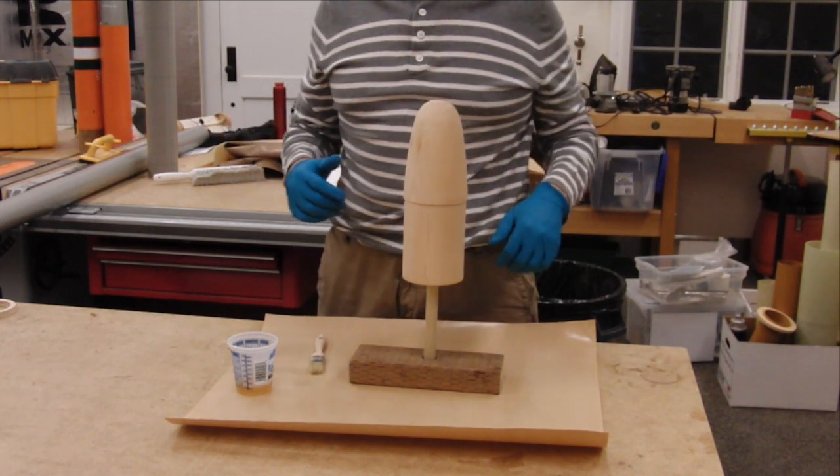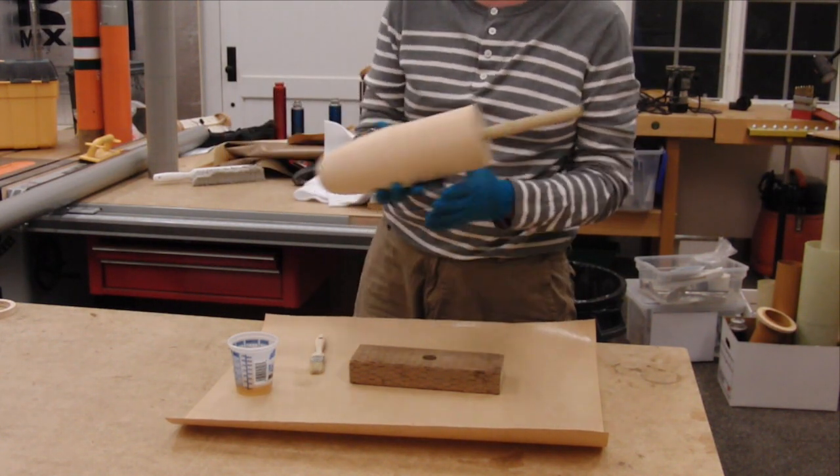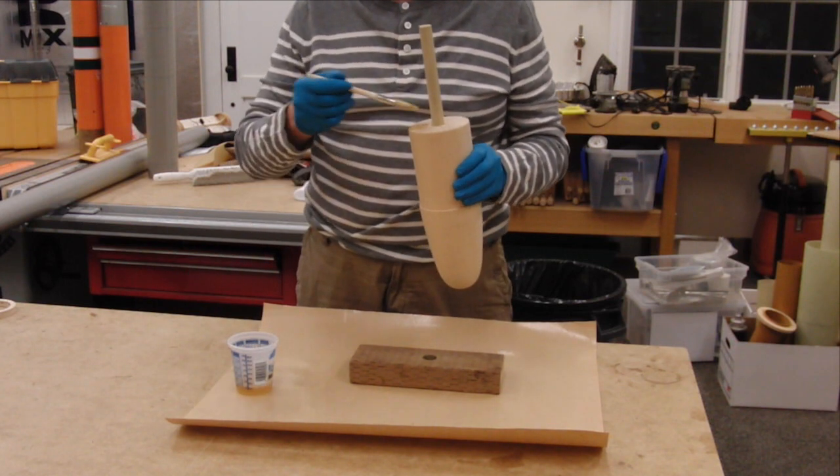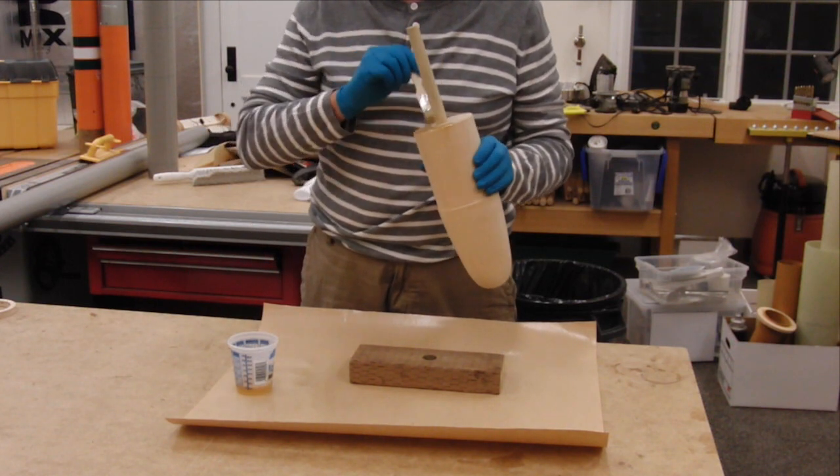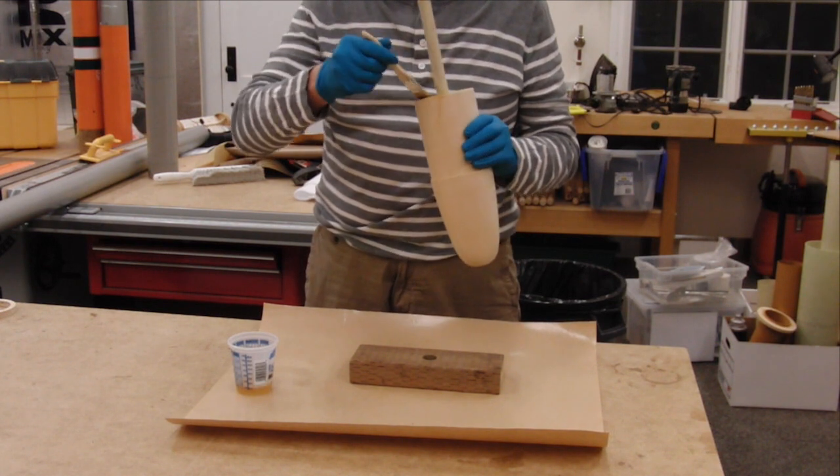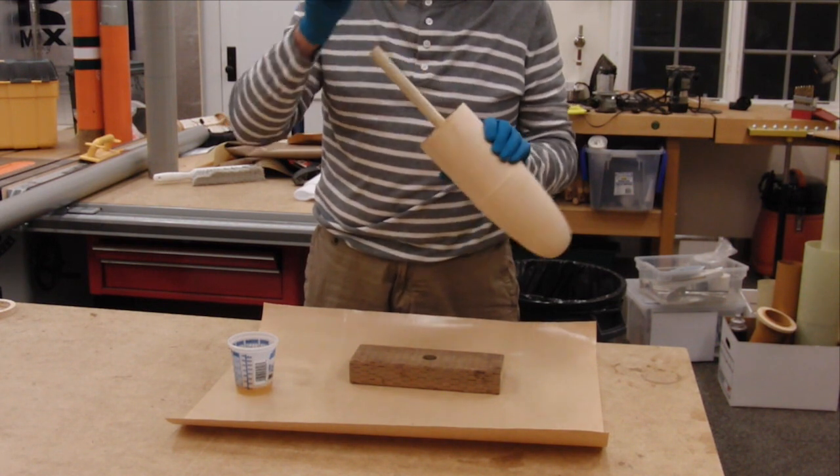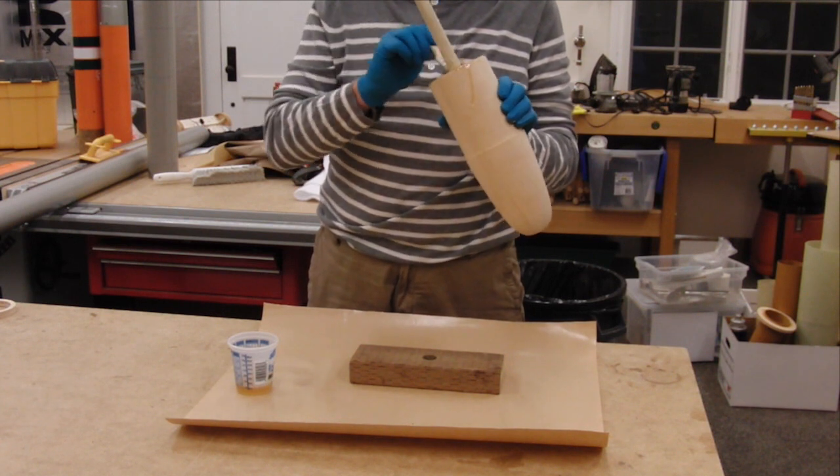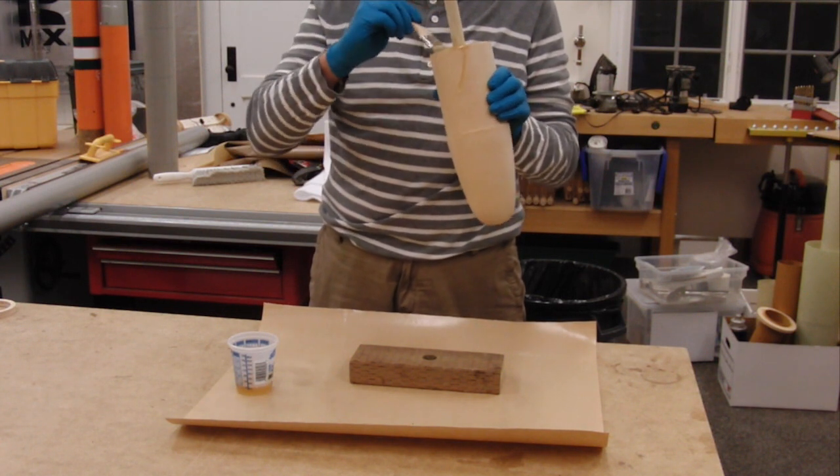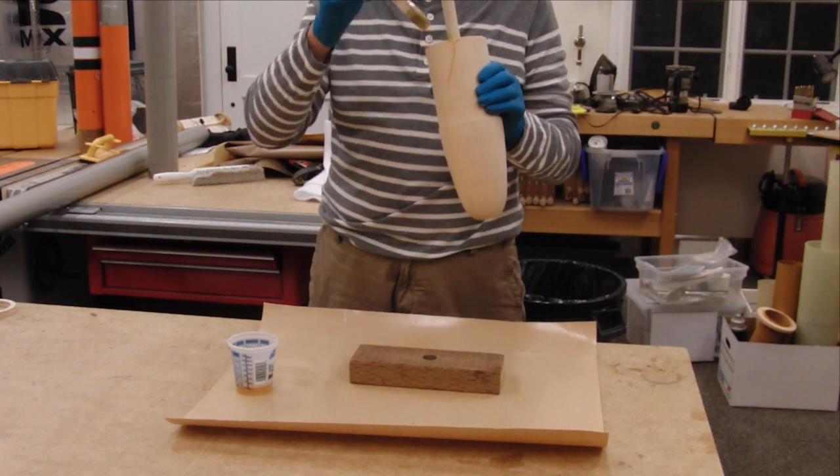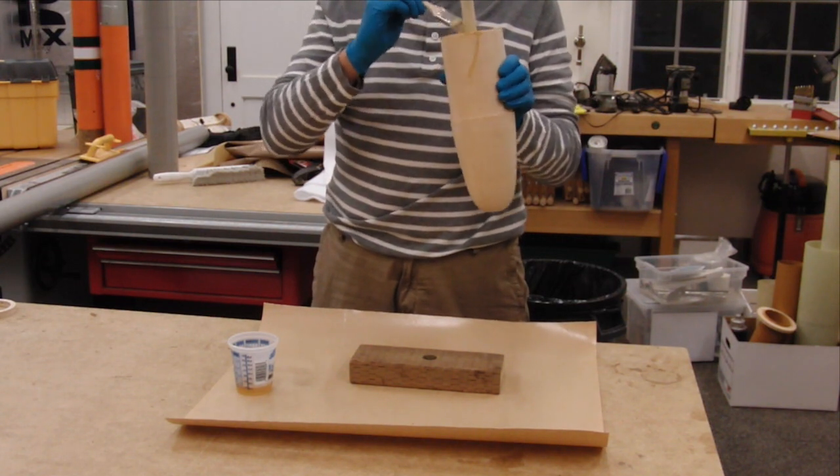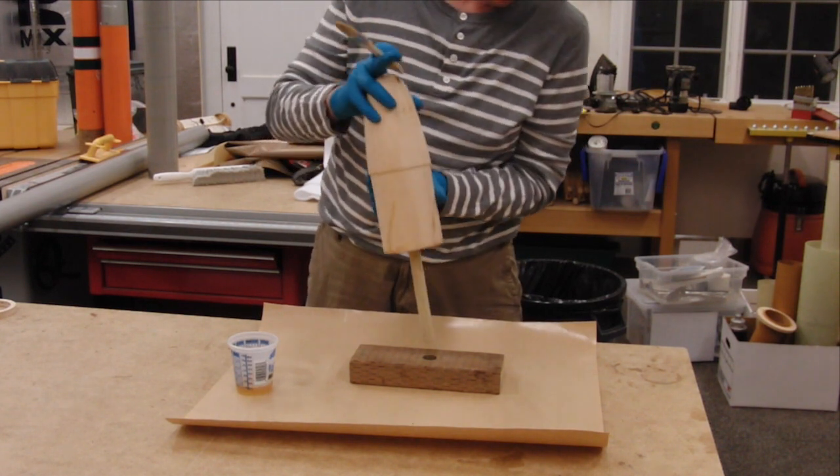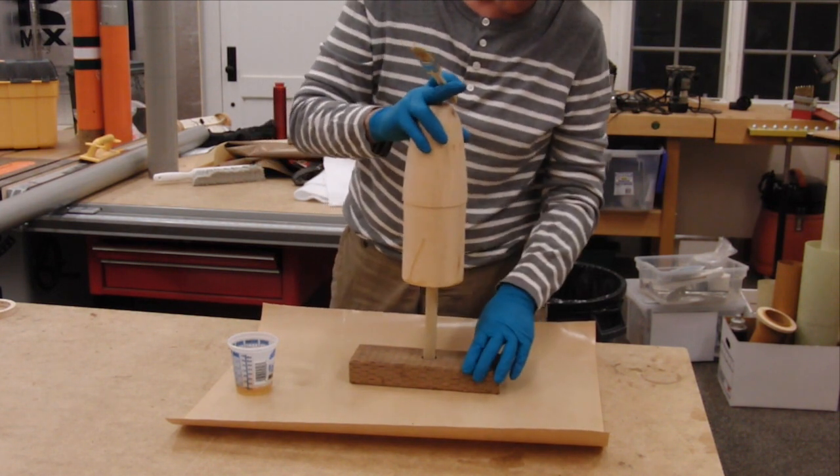The first of those steps will be to seal the grain of the plug. We're going to be wet sanding this before we're done, so we want to make sure that water won't seep into the plug. I've had problems with plugs that were glued up from multiple blanks with water seeping in and expanding unevenly.